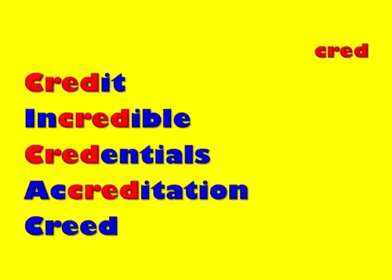Credit is basically a noun that means belief or trust. If I give someone credit, it means I give them trust or belief. However, if I discredit someone, it means I don't believe them, or I deny the belief or trust in them. Incredible means not able to believe or trust. Sometimes we see something so amazing that it's incredible — we're not able to believe or trust it.